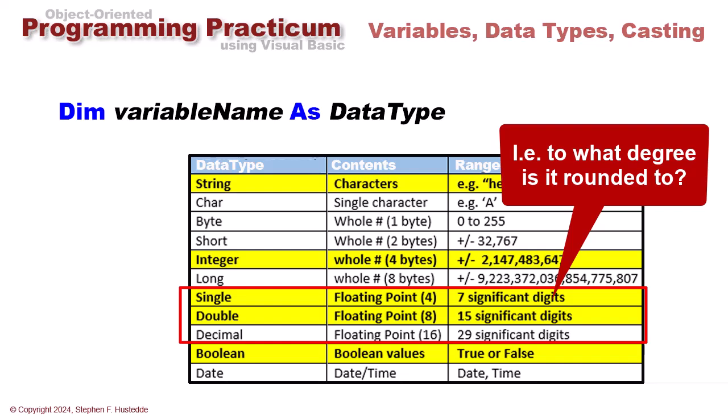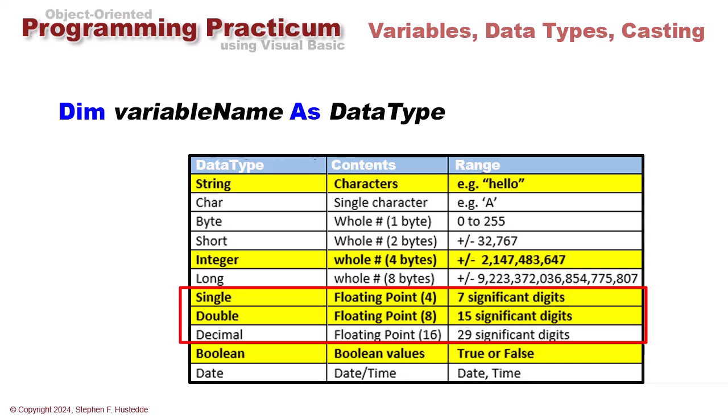I tend to use double much more than single because a lot of math routines automatically use double values. So I'm primarily using string, integer, and double. We have a decimal value which gives us a much longer range. We hardly ever use decimals—more for scientific type applications. We have a boolean data type which contains a true or false, and a date data type which contains dates and time.